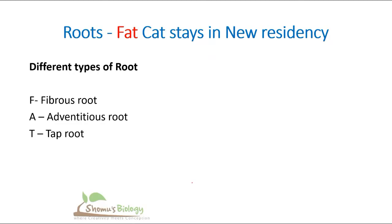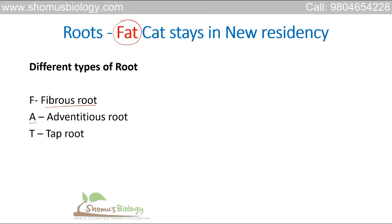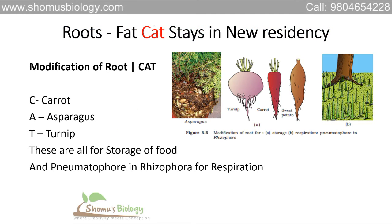The very first thing is roots — the different types of roots, their modifications and functions. To remember roots, you only need one single line: 'Fat cat stays in new residency.' From this sentence you can easily remember everything. Starting with 'fat': F for fibrous root, A for adventitious root, and T for tap root — those are the three types of root.